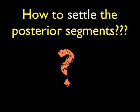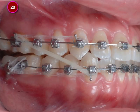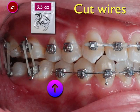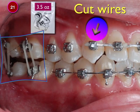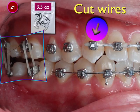How do you settle the posterior segment? When you deband, you will end up with posterior open bite. The key is to section the wire — to cut the wire — and leave the posterior segment as a free body. Once it becomes a free body, we hook up the elastic. The one I use is 3.5 oz.